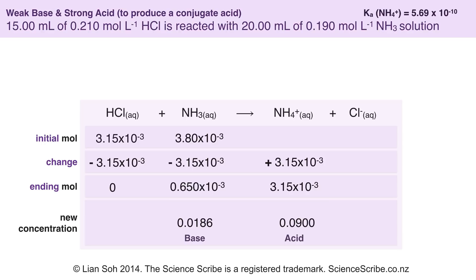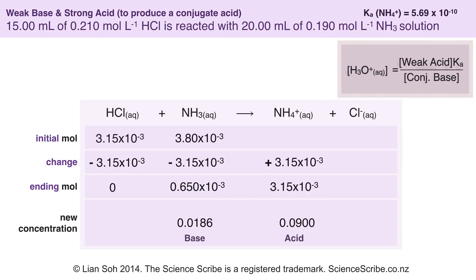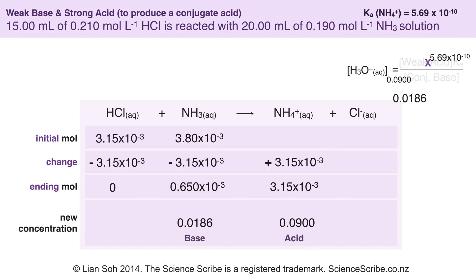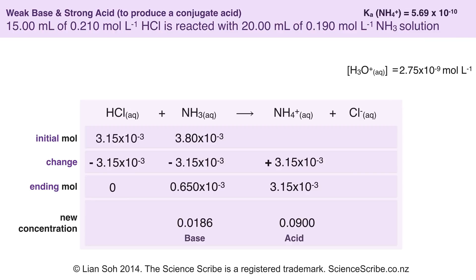I've identified that ammonia is the base and ammonium ions are acidic. The formula requires the acidic species on top and the base species at the bottom. Substituting the numbers in and pressing the calculator gives the concentration of hydronium ions, and using the pH formula gives the final pH. The pH when you take 15 mL of 0.210 mol/L hydrochloric acid and react it with 20 mL of 0.190 mol/L ammonia solution is 9.56.